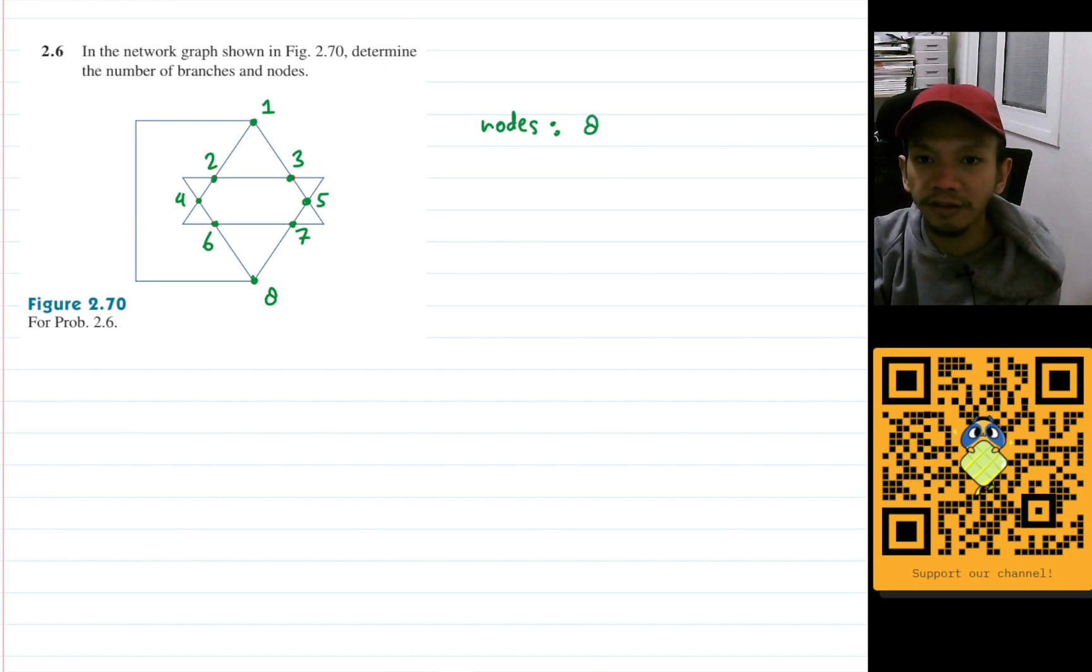Okay, now let's count the branches. Let's use purple here. So the first branch is the long one here, so just let it count as one, and then this vertex here.